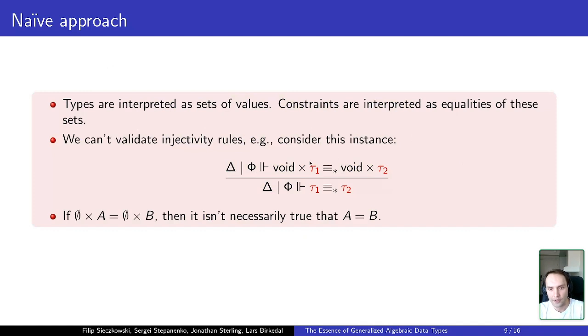So for example, consider interpretation of types as sets and type equalities as equalities of given sets. In this case, we cannot validate injectivity rules. So for example, given this instance of an injectivity rule that says that we can derive an equality between tau1 and tau2 given those two products to be equal, on the semantical level we cannot derive the same because equality on top is going to collapse to equality of an empty type to an empty type, which trivially holds.